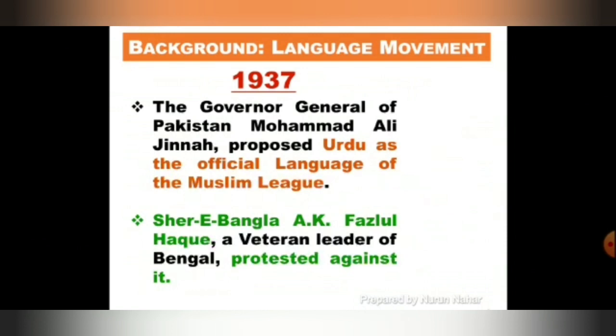Let's see the background of the language movement, which started from 1937. In 1937, the Governor General of Pakistan, Muhammad Ali Jinnah, proposed Urdu as the official language of the Muslim League. But a veteran leader of Bengal, AK Fazlul Haq, protested against it.